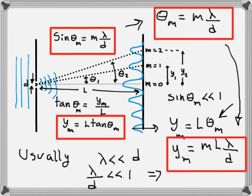We'll go over these equations again in the next video. This was meant to give you an overall view of where the double slit interference equations come from, beginning with the discussion from the previous chapter about the interference of two sources. See you in the next one.